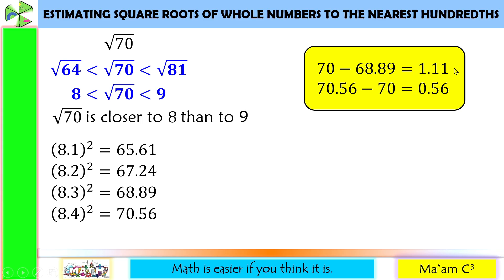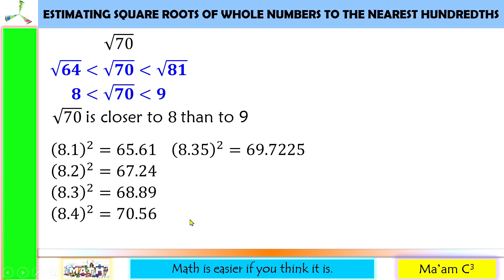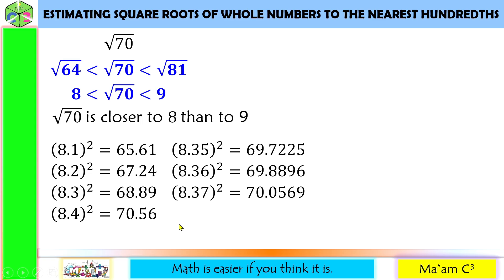This time, I'm going to square numbers with two decimal places that are closer to 8.4 but not beyond 8.4. These are 8.35 squared, 8.36 squared, and 8.37 squared. 8.37 squared is 70.0569, which is beyond 70 already. So I don't need to get 8.38 squared or 8.39 squared.